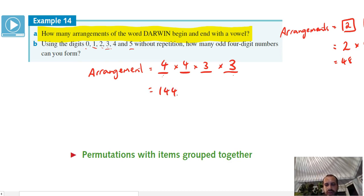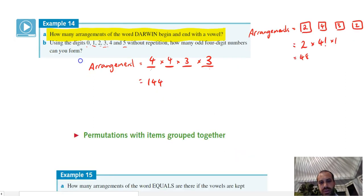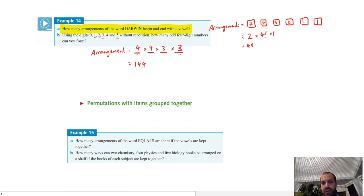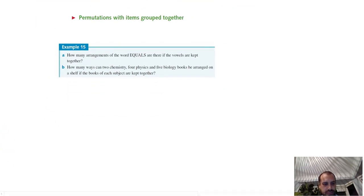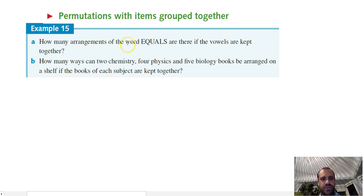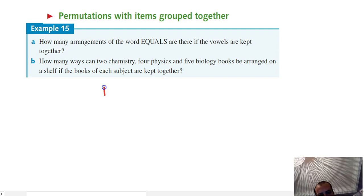Alright, so those are some restrictions. Let's look at ones where the items are grouped together, where Bob and Jill need to sit in a rowing boat next to each other - that seems to be a classic one. Let's see what questions we've got here that are similar. Alright, how many arrangements of the word EQUALS are there if the vowels are kept together?